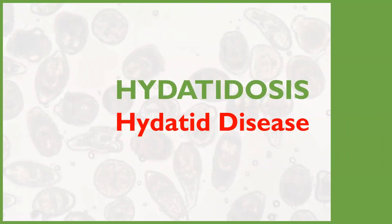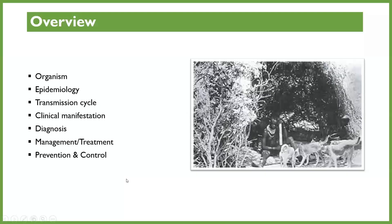We're going to look at a disease that occurs as a result of formation of hydatid cysts. The condition is called hydatidosis or hydatid disease. We're going to look at the organism itself, how it's spread, the transmission cycle, the manifestation of the clinical picture, how it is diagnosed, and then management followed by prevention and control.